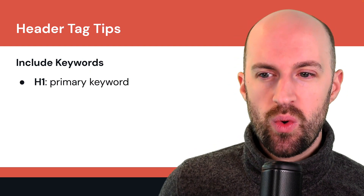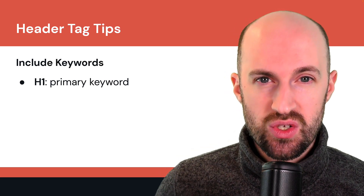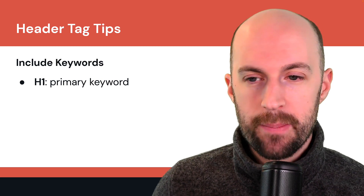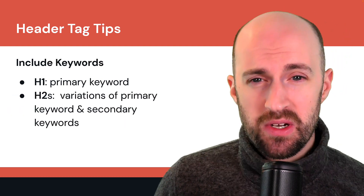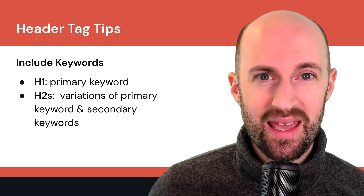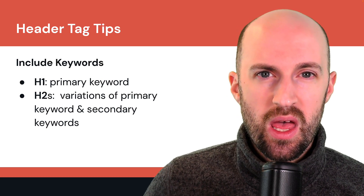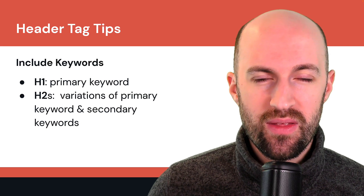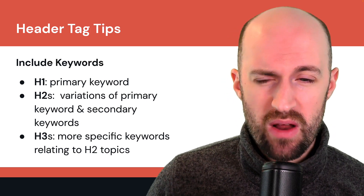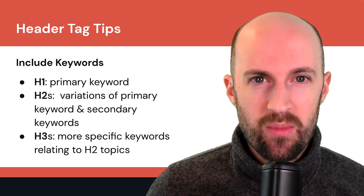Include keywords. For the H1, make sure you have the primary keyword — there's only one H1 on every page, so this is basically what your page or article is about. Include your main primary keyword there. For H2s, you can use variations of the primary keyword, secondary keywords, and LSI keywords — latent semantic indexing keywords that relate to that topic and give it context. For H3s, you can add more specific keywords relating to the H2 topics. There are no hard rules, but definitely use the primary keyword in the H1.